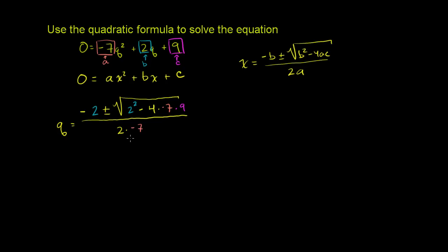Now we just evaluate this. So this equals negative 2 plus or minus the square root of—2 squared is 4. And if we take negative 4 times negative 7 times 9, this negative and that negative cancel out, so it becomes a positive number.